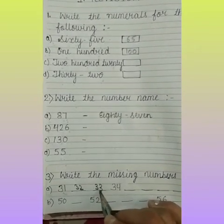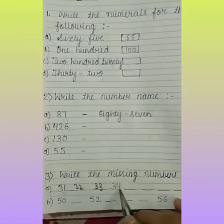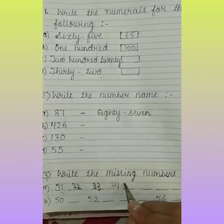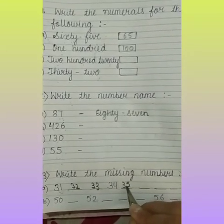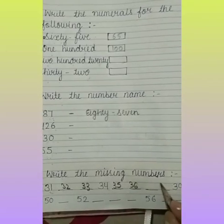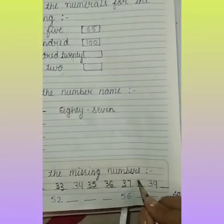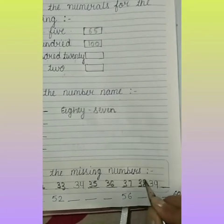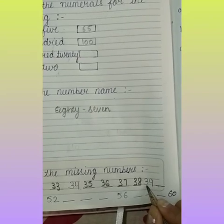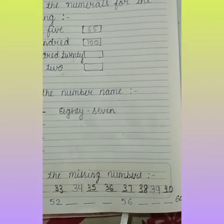Continuing from 32: 33, 34, 35, 36, 37, 38, 39 — 39 is already given — and the last number is 40.